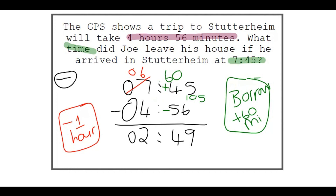6 minus 4 simply gives you 2 hours. So he left at 2:49 in the morning. He drove for around 5 hours and arrived at 7:45 — if you estimate it, you can see it makes sense. To recap: when you borrow, you're actually borrowing 60 minutes, so you add 60 by the minutes and subtract 1 by the hours.